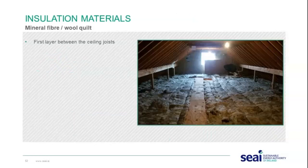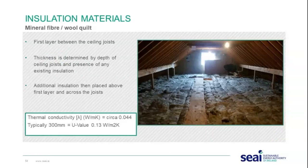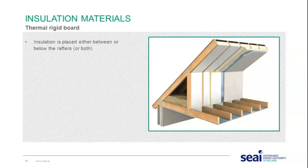For mineral fibre or wool quilt, you typically place the first layer between the joists — dependent on the thickness of the joists and any existing insulation — and then additional insulation is placed above the first layer and across the joists. The thermal conductivity for common mineral wool is 0.044, and you would need to install around 300 millimetres, which gives a U-value that exceeds the scheme requirement of 0.13.